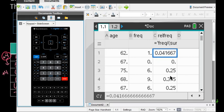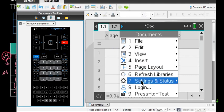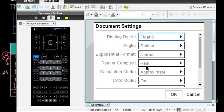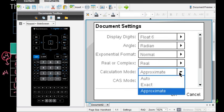If yours gives you a fraction, you can change that under document and settings. My calculation mode is approximate. Auto will put it as either one or the other. Exact will always put it as a fraction.